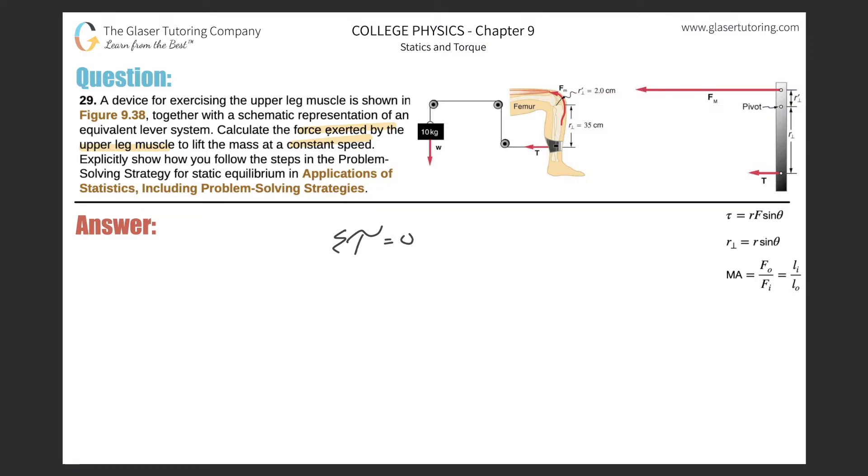They both have a lever arm distance and a force value. The force of the muscles produces a torque that would rotate counterclockwise, so it's positive. The torque produced by the tension in the cable from the weight is clockwise, so it's negative. Therefore, torque of muscle minus torque of weight equals zero, meaning torque of muscle equals torque of weight.